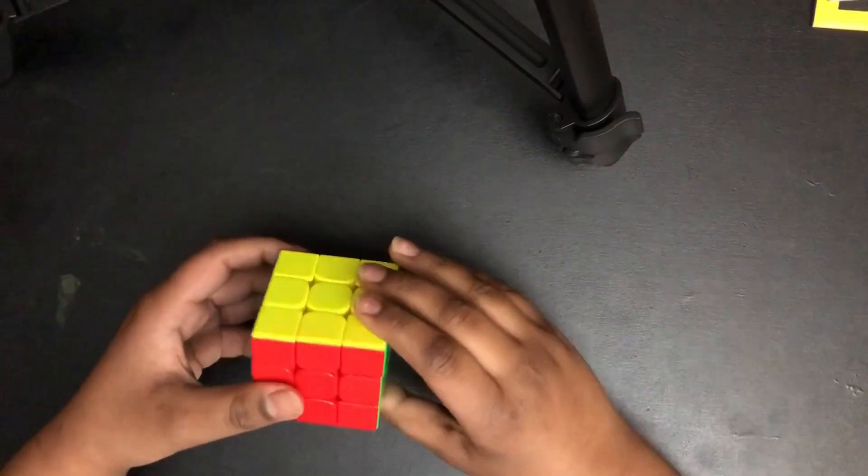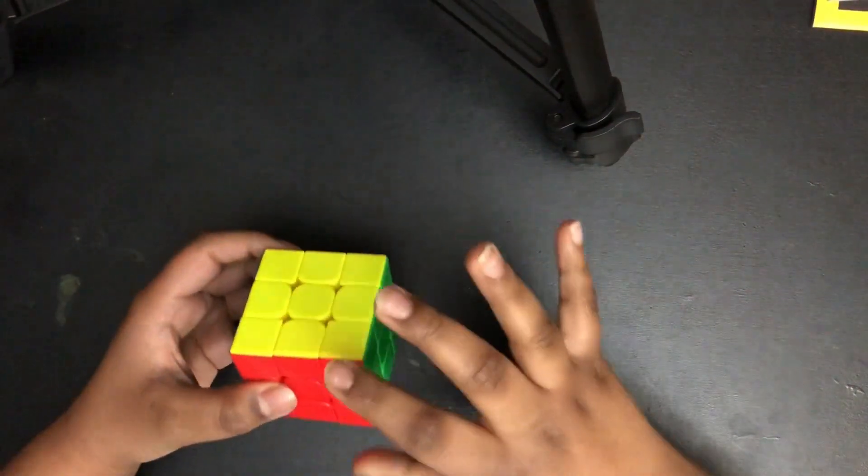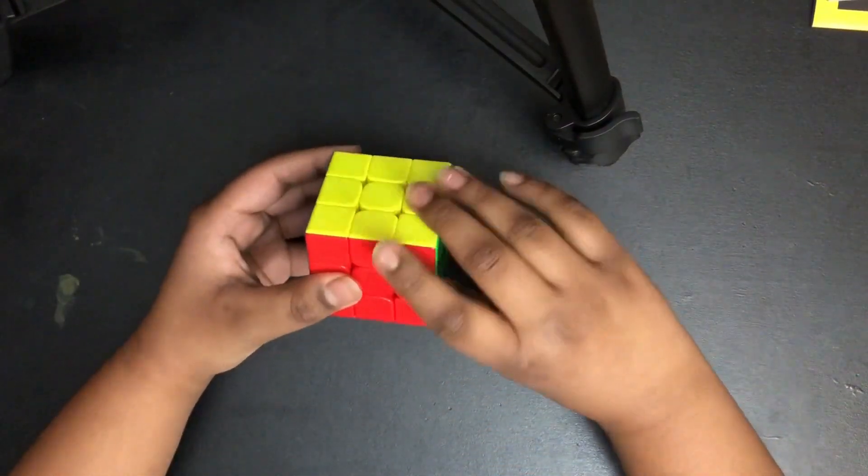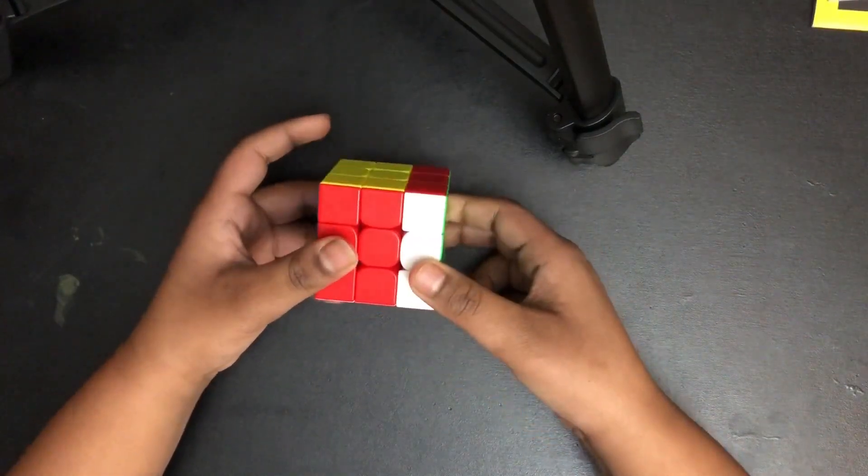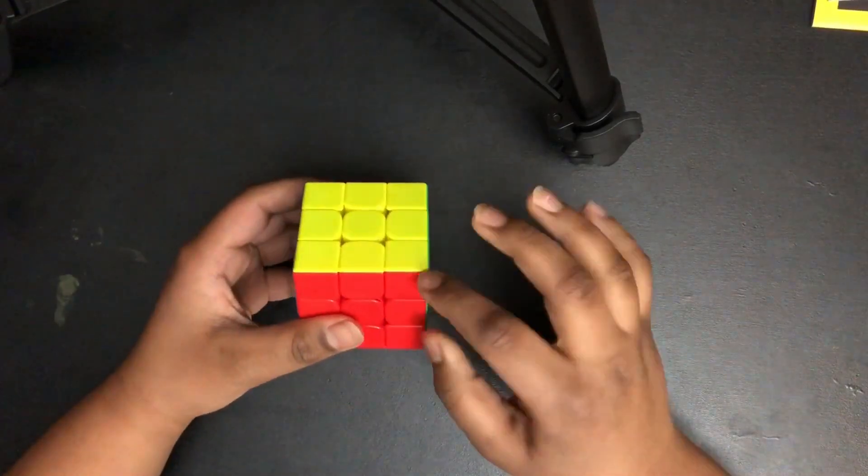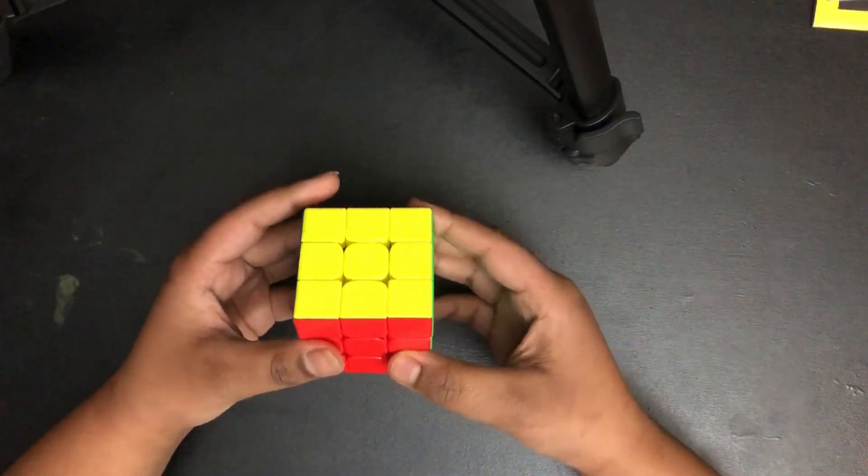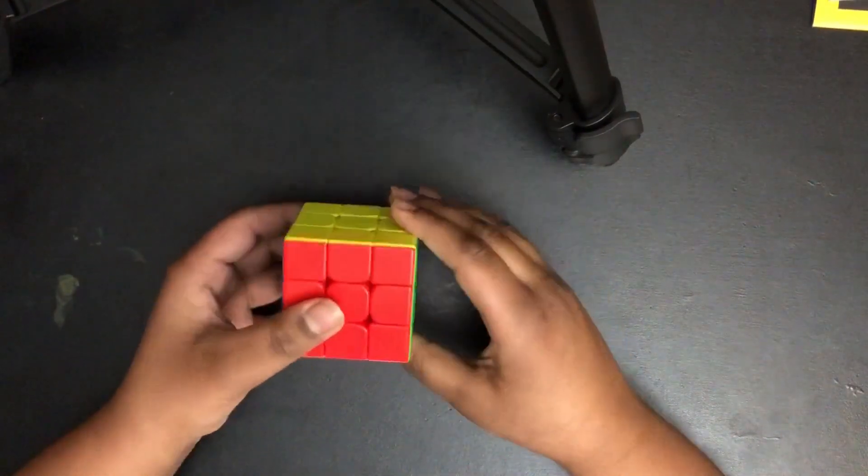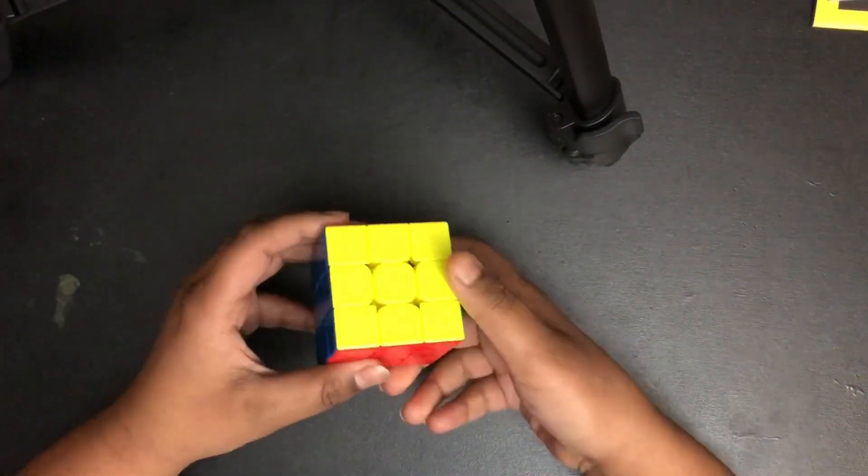The first move is R. So you can think of it as this layer going up to this. So this is how you do it. And if there's a prime at the end of each notation that I'm about to show you, it means do the opposite. So for R we do this. For R prime we undo that.